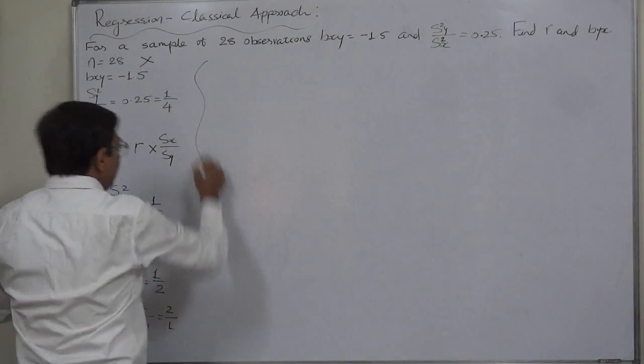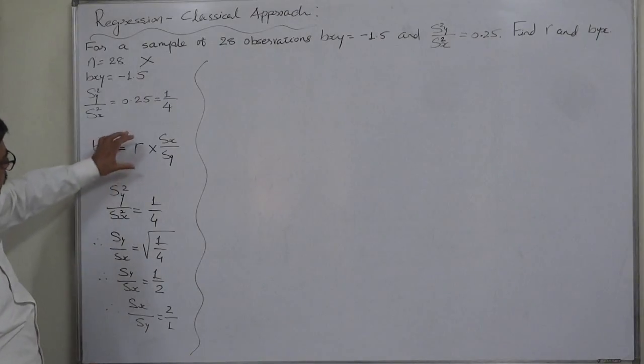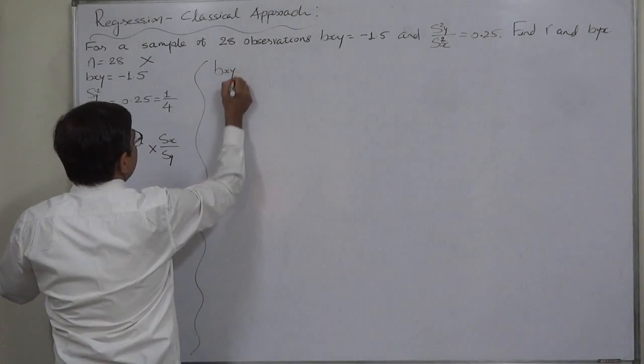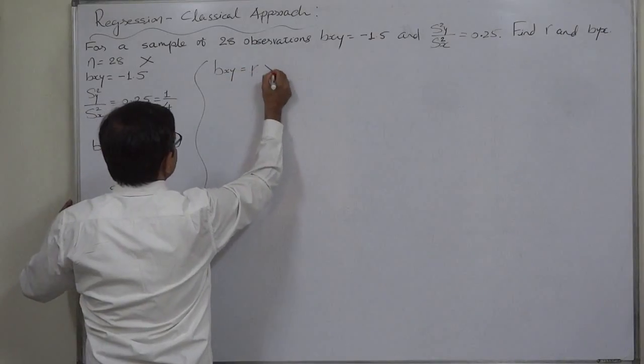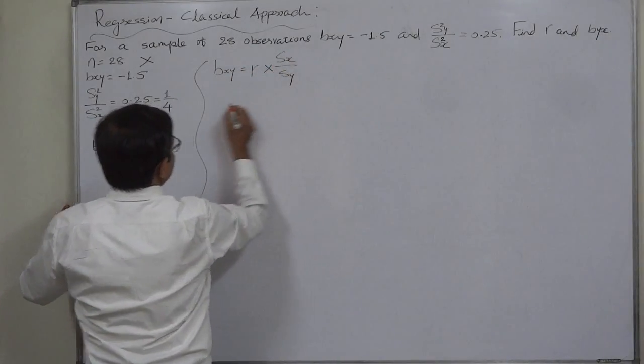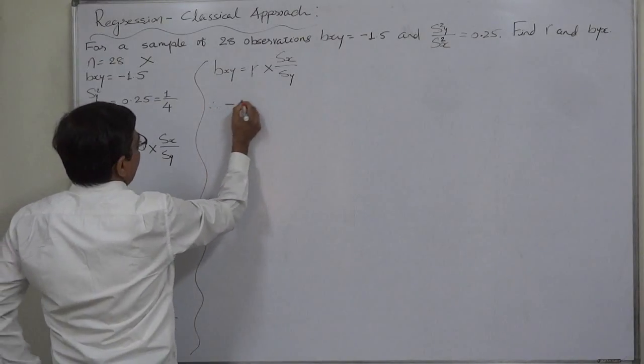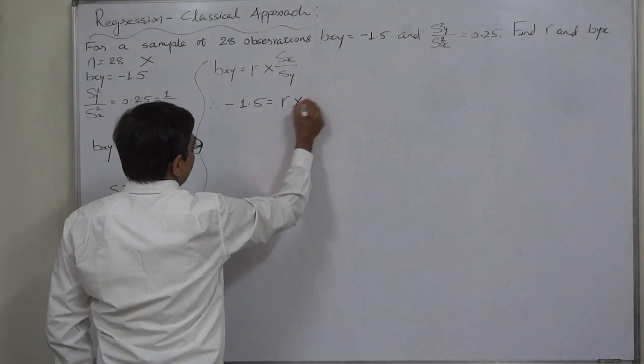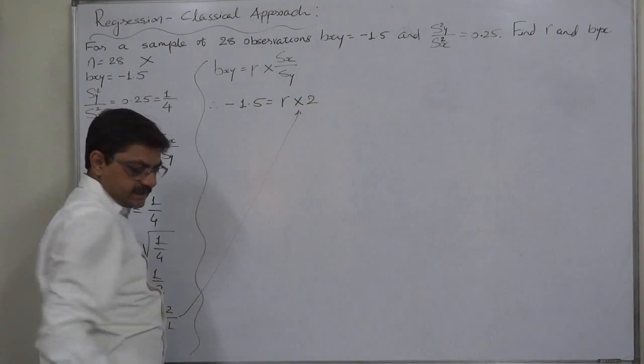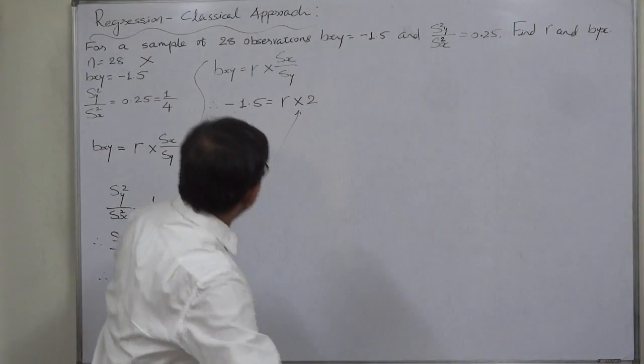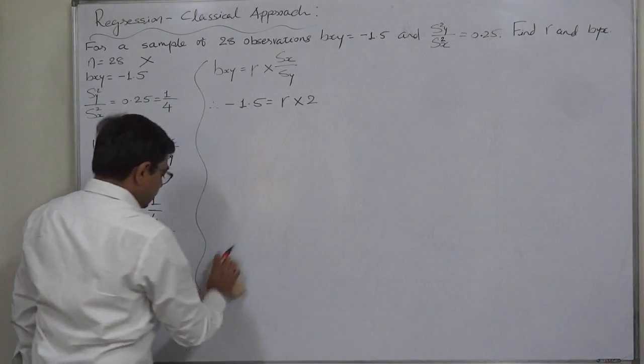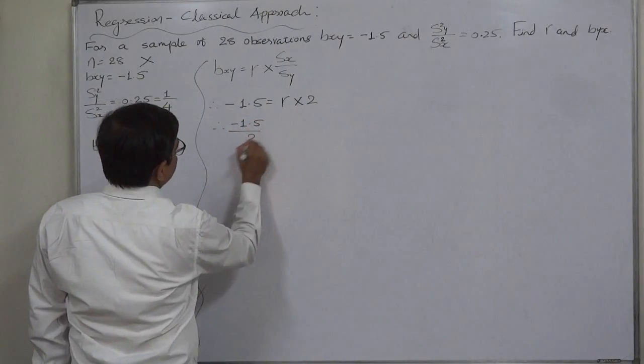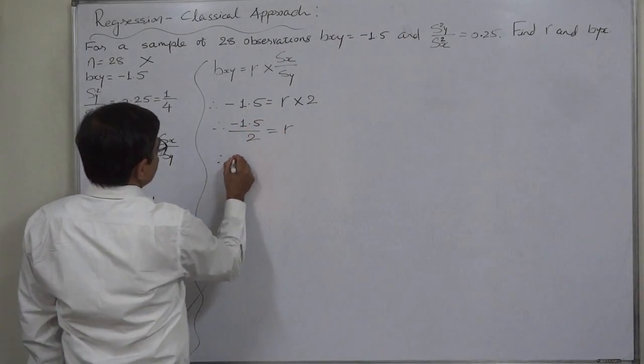Now we can use this relationship to substitute in this formula. Bxy equals to coefficient of correlation into Sx upon Sy. That means minus 1.5 equals to coefficient of correlation into 2. So now, this is simple case of changing the subject. Minus 1.5 divided by 2 will be the coefficient of correlation.